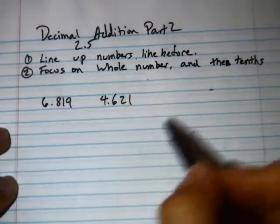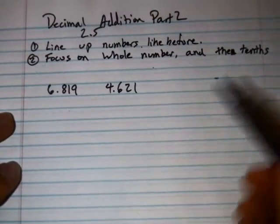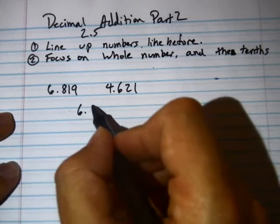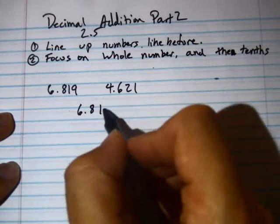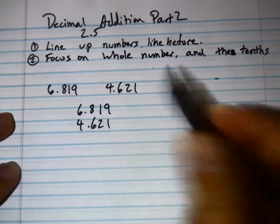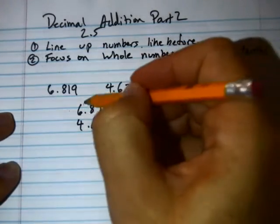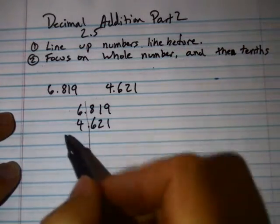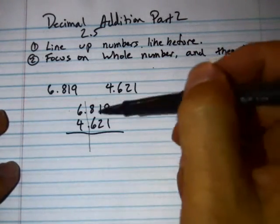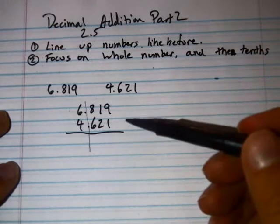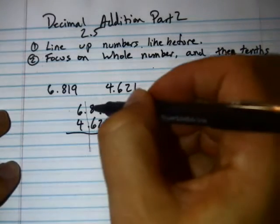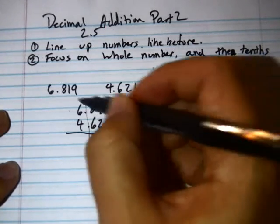And I don't want to have to add all of the decimal points. What I'm going to do is I'm going to first line up my little numbers. 6.819 and 4.621. Remembering again that my decimal points are in line. And I'm really going to add my digits in the tenths. So, I have 8 and 6 which gives me 14.